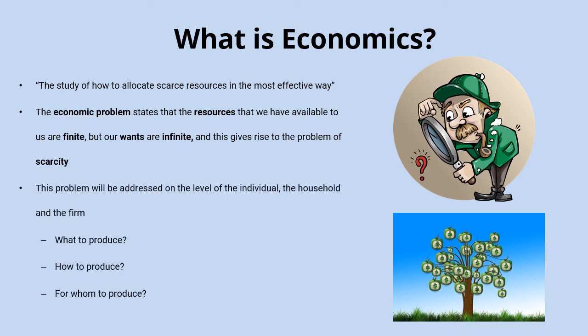When making those decisions we look at what we call the three economic questions. The first is what to produce — what specific products or services should we channel our resources into, such as computers, bikes, or cars? The second is how to produce — what is the most efficient way to organise that production; should government take a greater role or leave it to the private sector? Finally, for whom to produce — who is most deserving of those goods and services; should people with more money have more access, or should we aim for a more equal society?